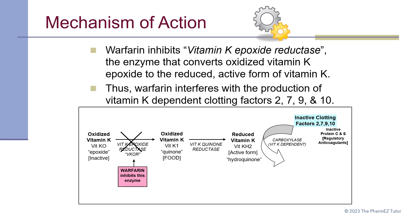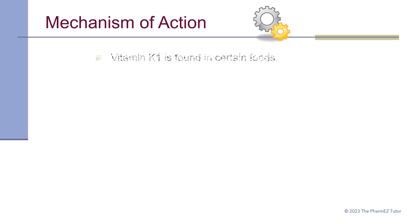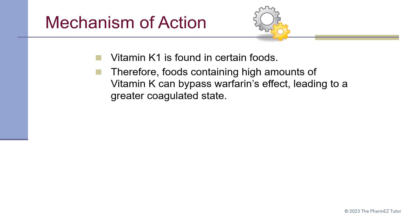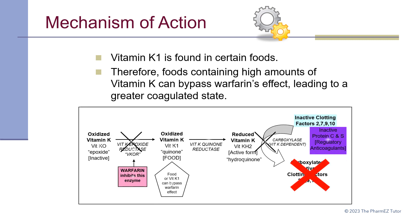Warfarin inhibits vitamin K epoxide reductase, the enzyme that converts oxidized vitamin K epoxide to the reduced active form of vitamin K. Thus, warfarin interferes with the production of vitamin K dependent clotting factors 2, 7, 9, and 10. Vitamin K is found in certain foods; therefore, foods containing high amounts of vitamin K can bypass warfarin's effect, leading to a greater coagulated state. You can see in the diagram where dietary vitamin K1 eliminates warfarin's effect on the carboxylase, providing active clotting factors and a coagulated state.